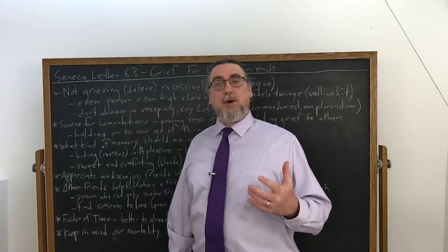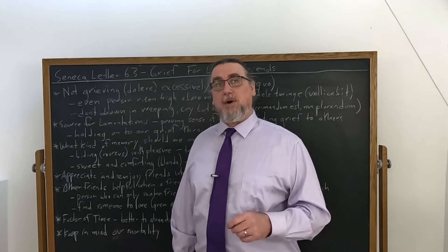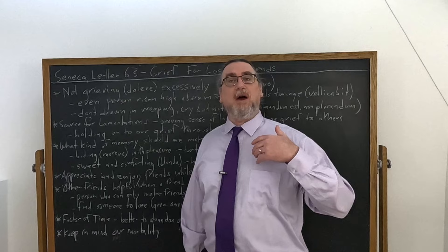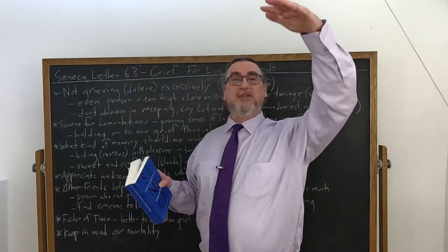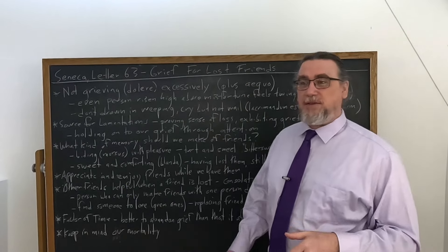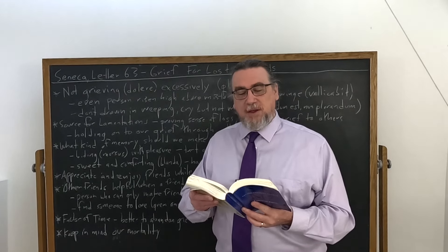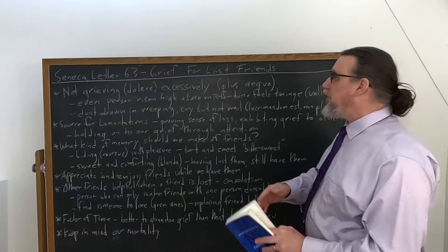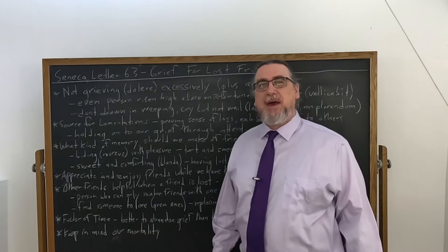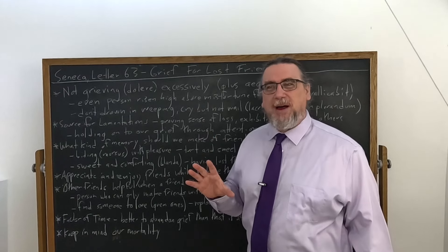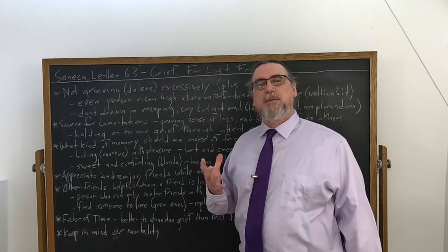He may be referencing the legendary sage, the perfect person, the ideal of Stoicism, or he might be just talking about people who are very well developed in it. He says, such firmness of mind, so as not to grieve at all, belongs only to the person who has risen high above misfortune. Now, this rising high, this is actually from a Stoic perspective, what we call great souledness or magnanimity, which is part of the virtue of courage or fortitude for the Stoics. Notice what he says about this person. They will feel a twinge.